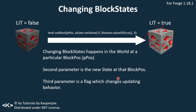How do we change block states? We change block states by setting the block at a particular position. We get the world, change it at the particular position, and set the value of a block state property to a particular value. The flag 3 here is for the updating behavior.